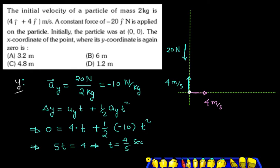4 by 5 seconds. Then for the x-coordinate of the particle, x direction is constant. Distance equals velocity times time. 4 meters per second times 4/5 seconds equals 3.2 meters. The x value is 3.2 meters.